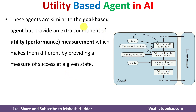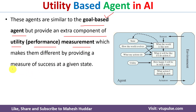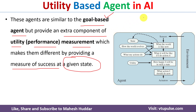Utility based agents are similar to the goal based agents, but they add an extra component known as utility or performance measurement, which makes them different from goal based AI agents by providing the measure of success at a given state. That means whenever we are present at a particular state, in a goal based agent, out of different possible paths we select a path which will lead us to the goal — we don't consider whether that particular path is the best at that given point of time.